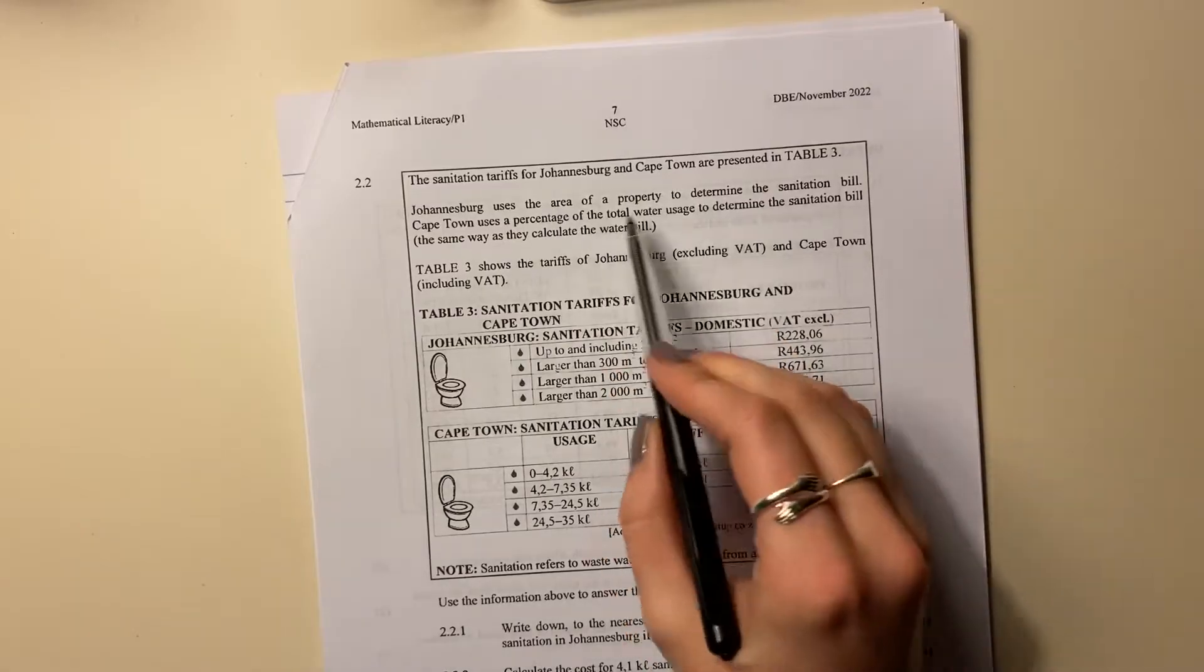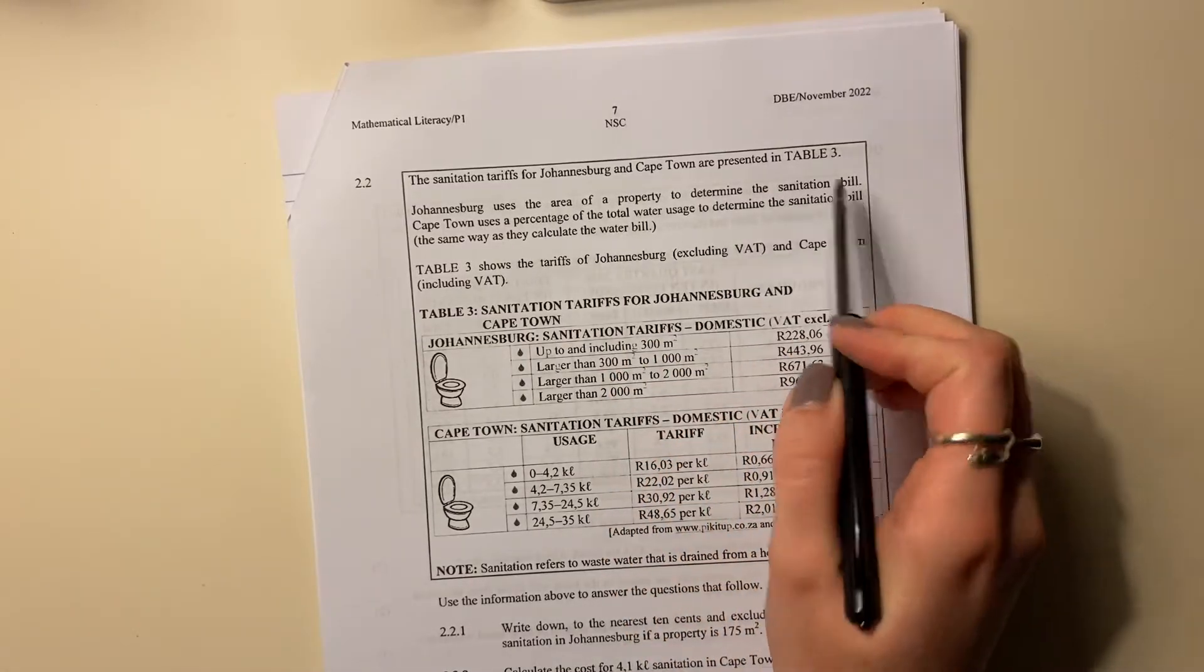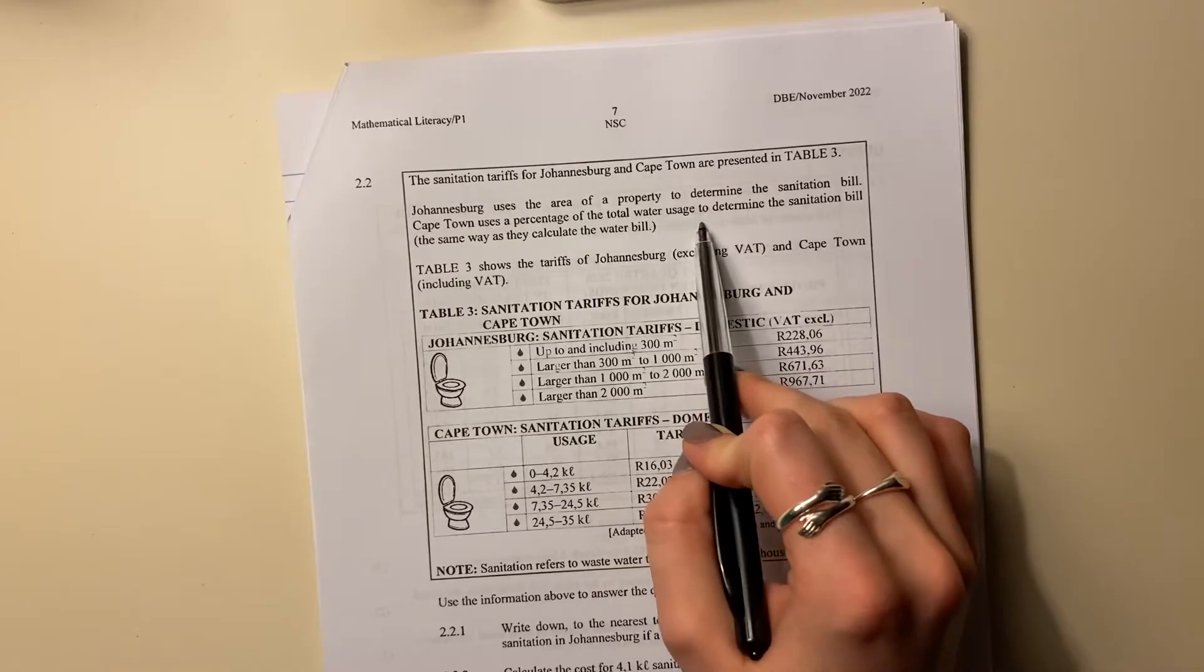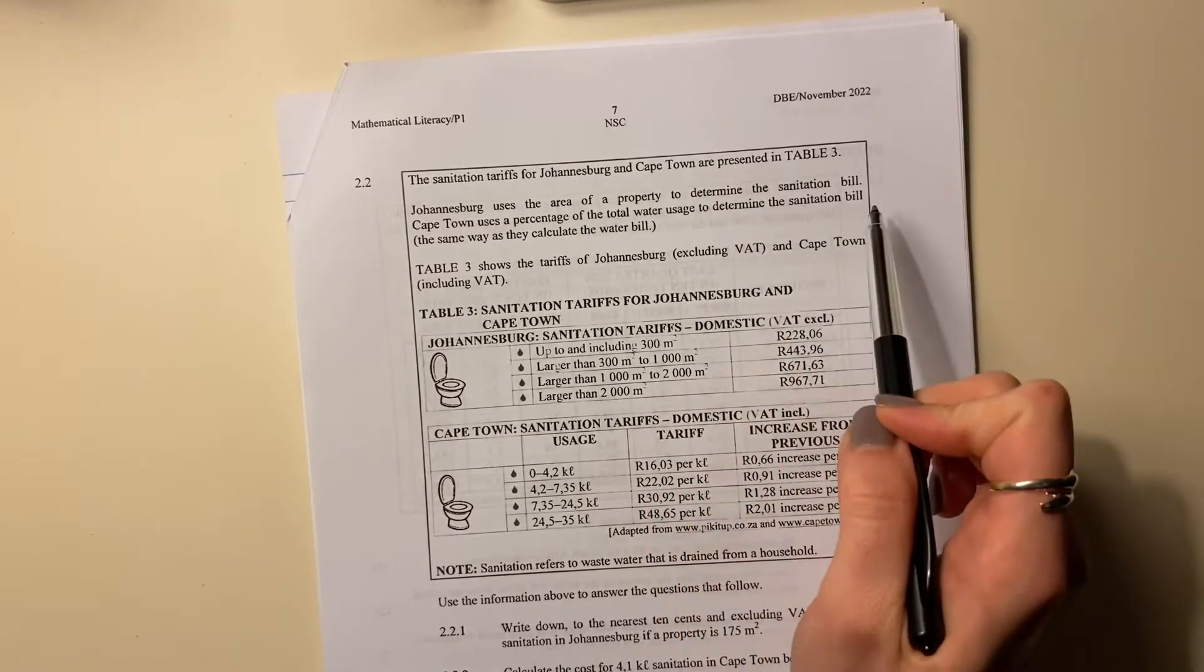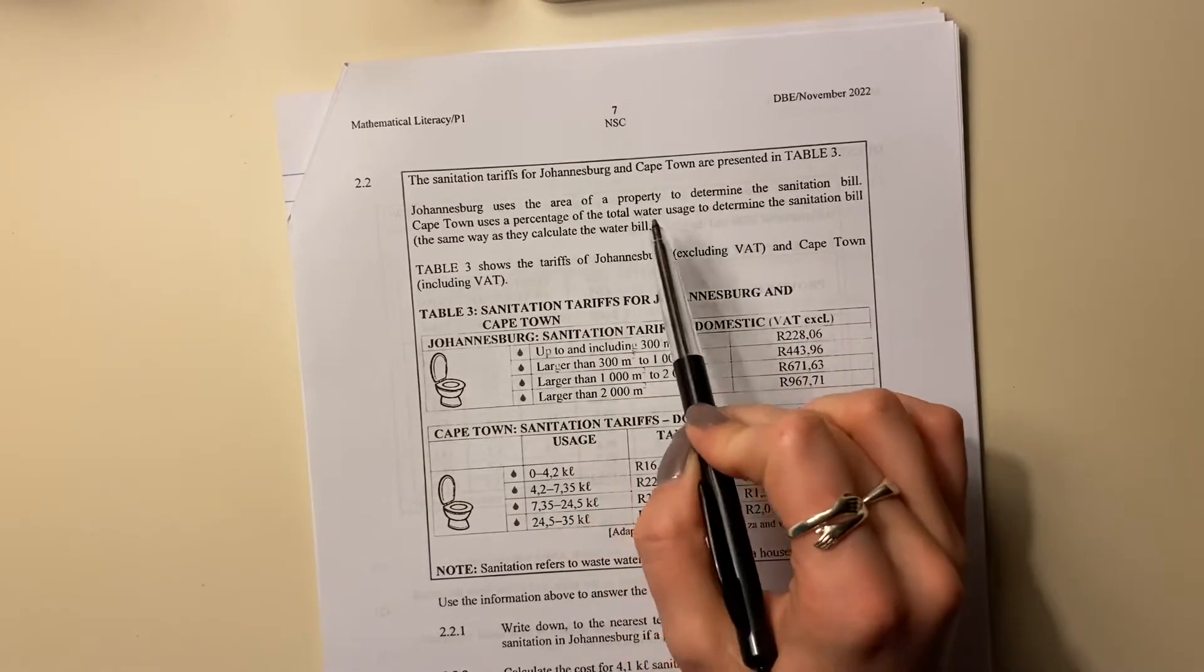Johannesburg uses the area of a property to determine the sanitation bill. Cape Town uses a percentage of the total water usage to determine the sanitation bill the same way as they calculate the water bill.